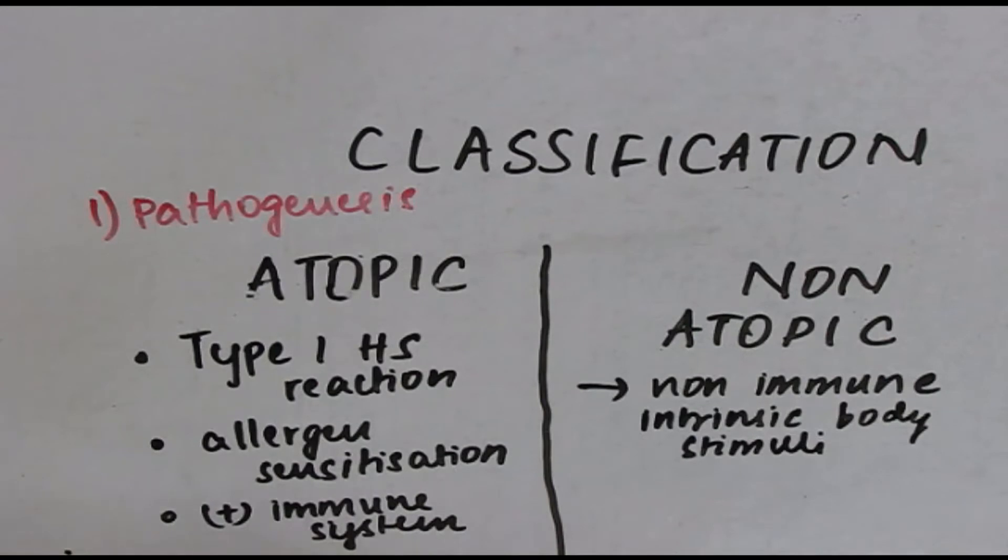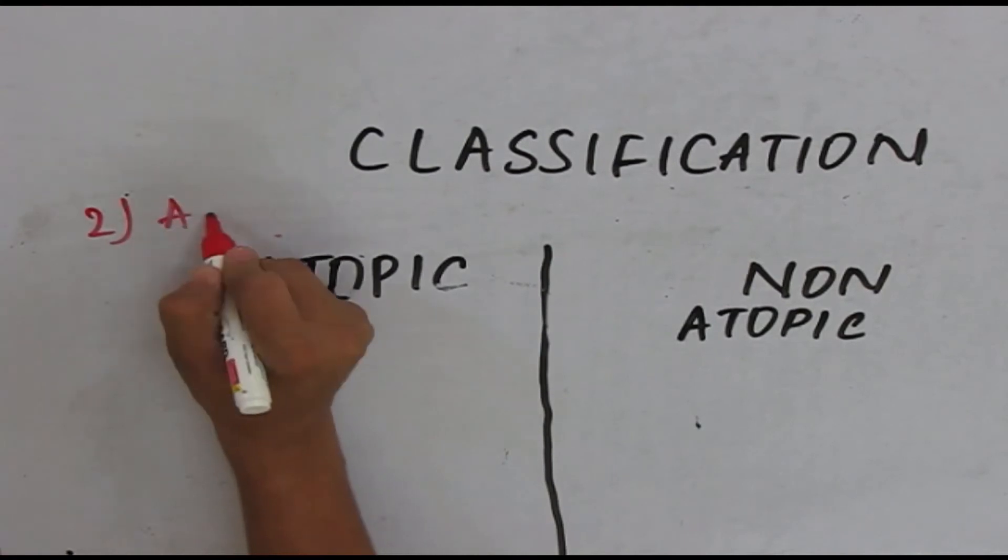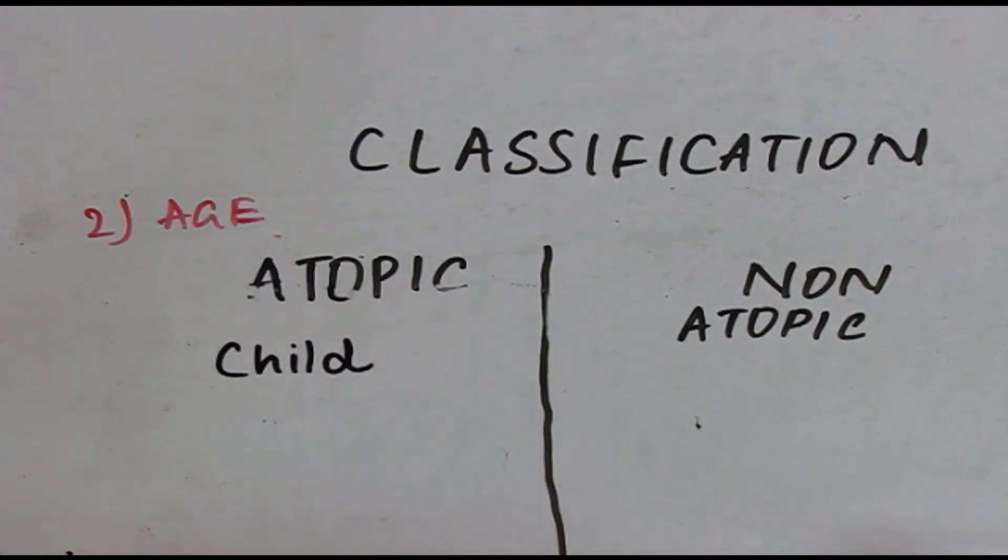The stimulus is usually intrinsic body stimulus, whereas in atopic there is extrinsic stimuli. The second factor is age. Usually, atopic type manifests in childhood, whereas the non-atopic type manifests in adulthood.